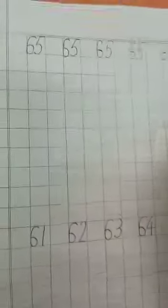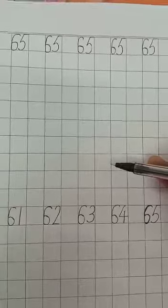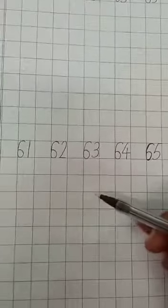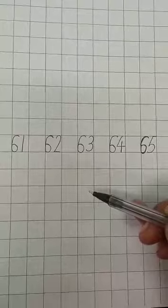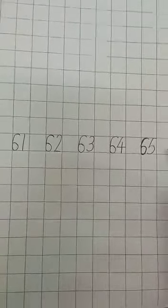So children, on half page, you will write number 65. And below number 65, you will write counting 61 to 65.